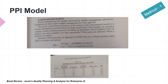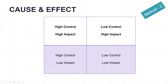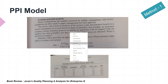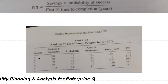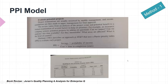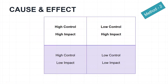Hartman in 1983 described an approach called the Pareto Priority Index. Looking at the formula and the table — there are projects A through E with savings, probability, cost, time, and a calculated PPI. The higher the PPI number, the more likely you are to select that project. For example, project C may score 60, making it a likely candidate. Keep in mind you can use PPI as one of your evaluation methods.